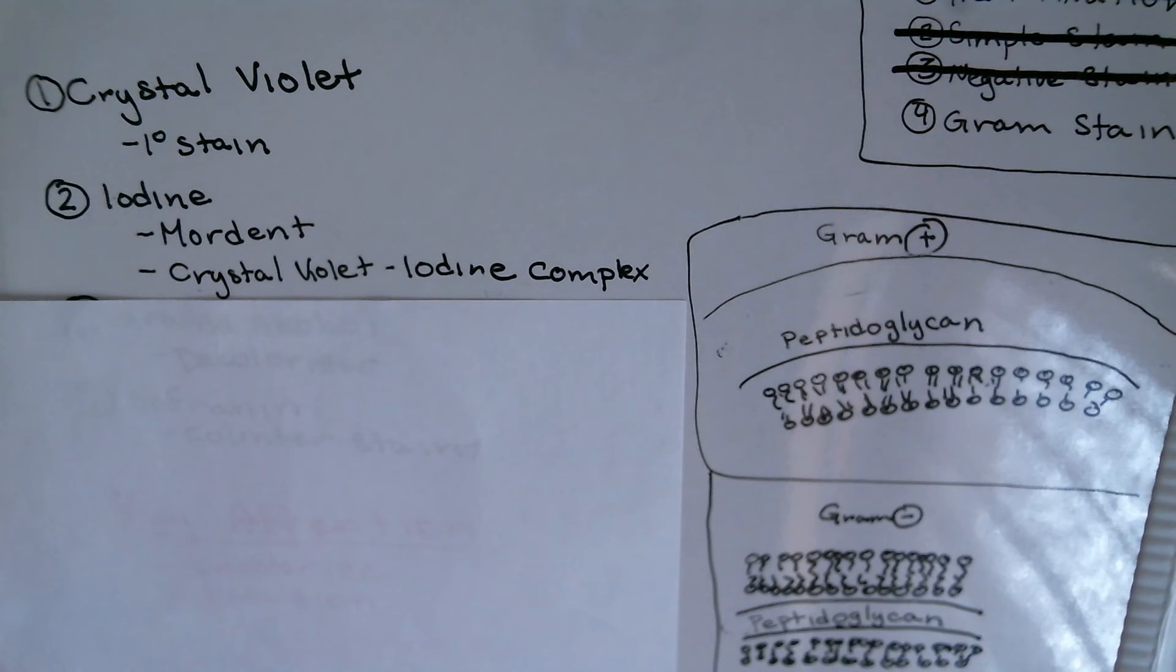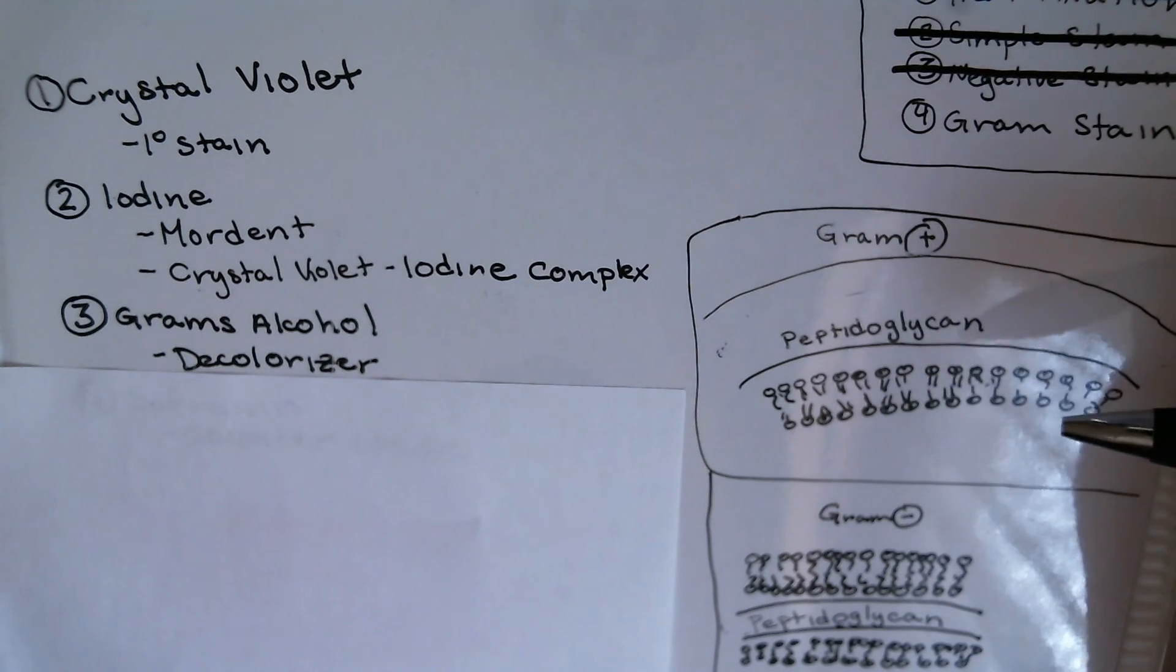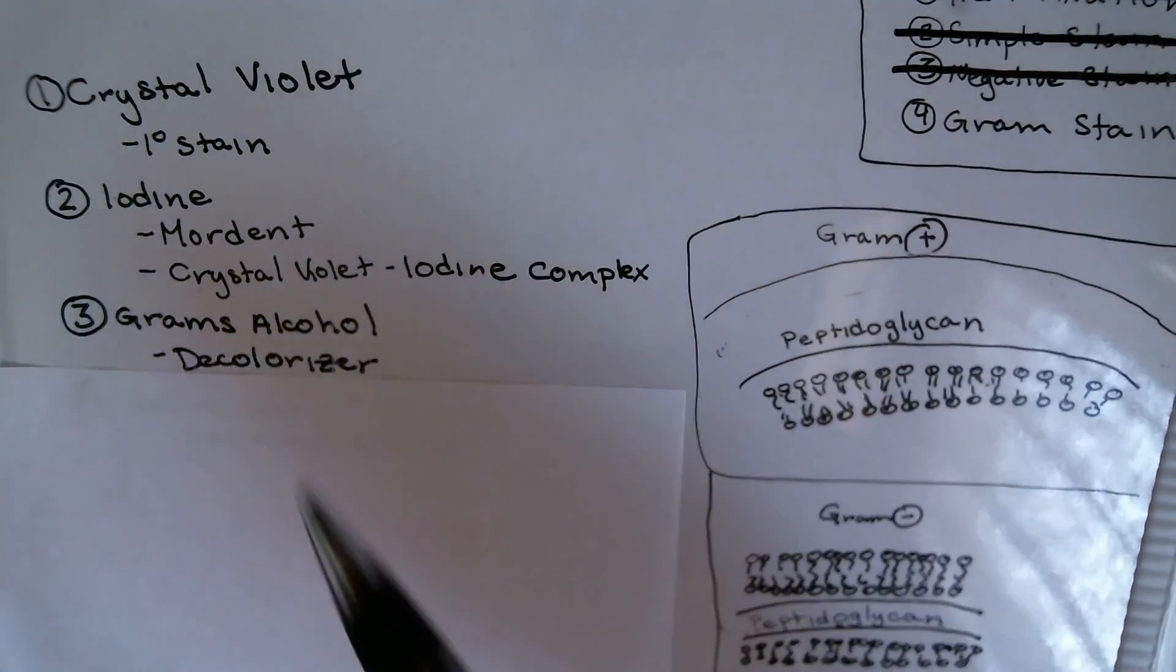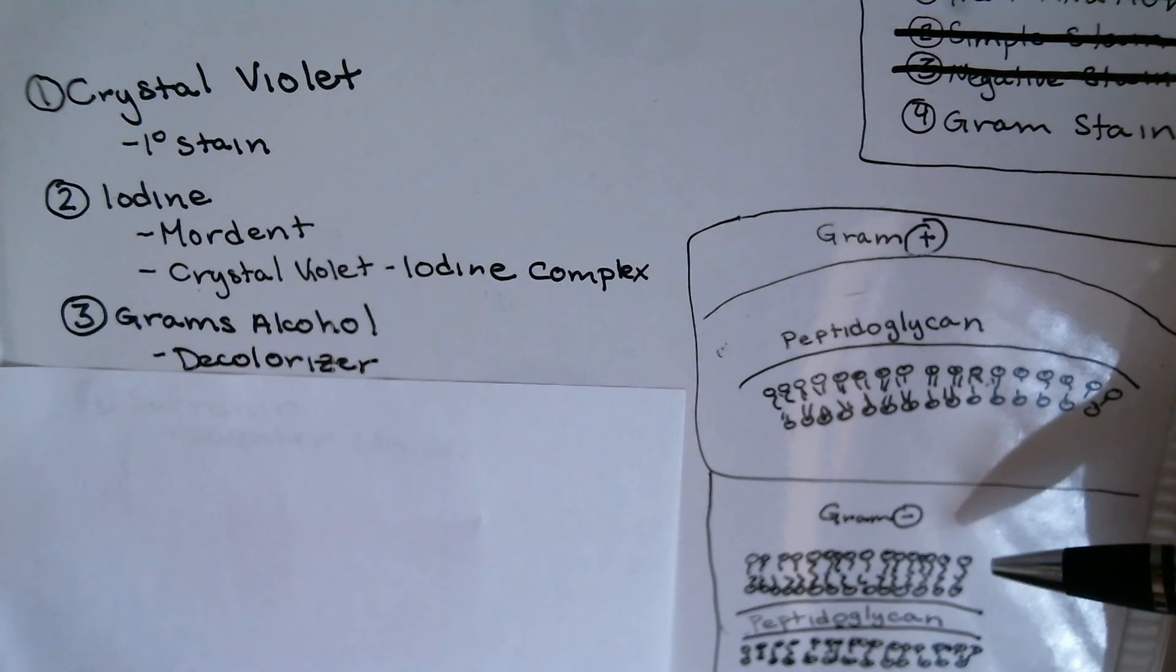Next up, you'll have your gram's alcohol, and this is considered to be your decolorizer. Now this is where the thickness of the peptidoglycan layer comes into effect. The alcohol shrinks the peptidoglycan layer and squeezes out the primary stain.